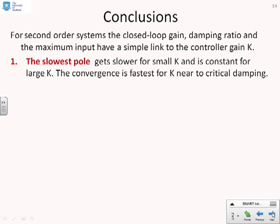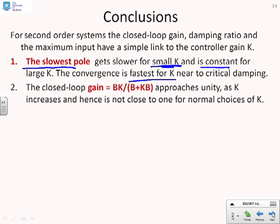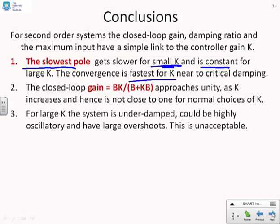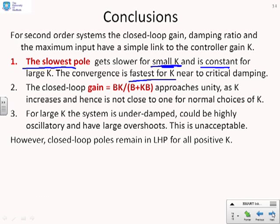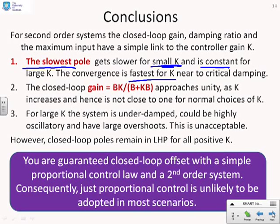In conclusion, for second-order systems, the closed-loop gain, damping ratio, and maximum input have a simple link to the controller gain k. The slowest pole gets slower for small k but is constant for large k, and convergence is fastest near critical damping. The closed-loop gain approaches unity as k increases, but for practical choices of k it's never very close to one. For large k the system is underdamped and could be highly oscillatory with large overshoots, which is generally unacceptable. Notably, all responses were stable — the closed-loop poles stayed in the left half plane for any positive k. Consequently, using just proportional control is unlikely to be acceptable in most scenarios.